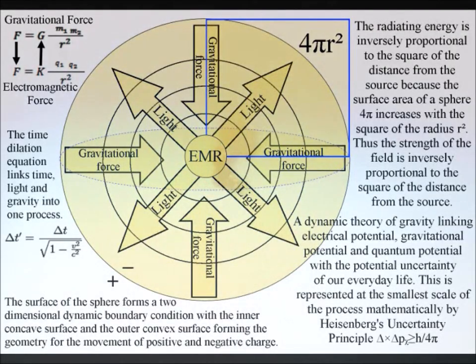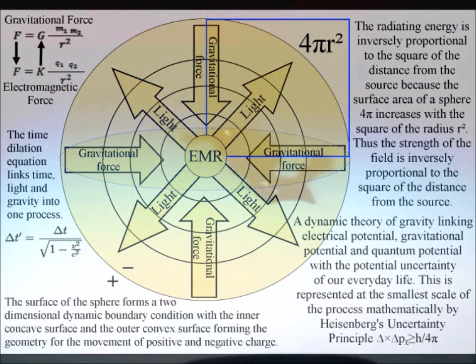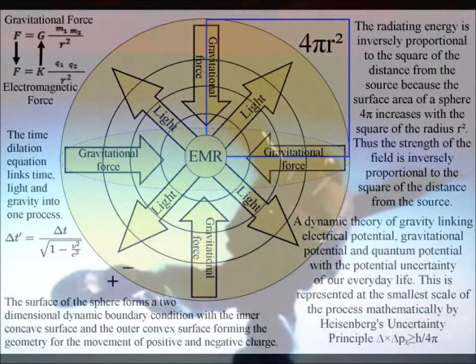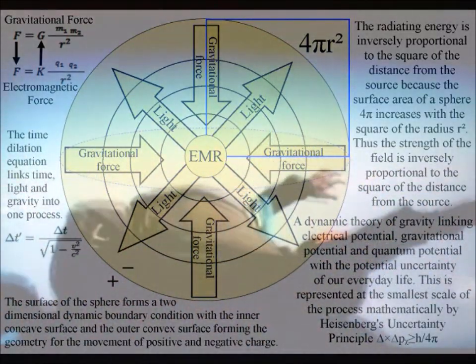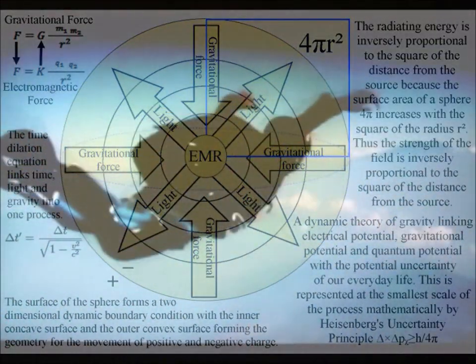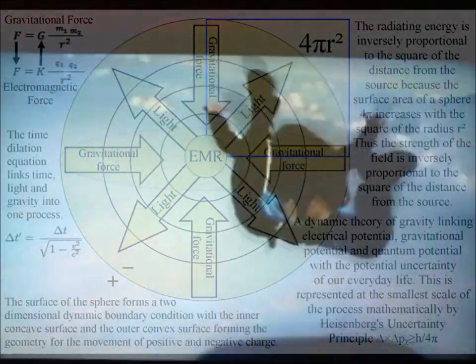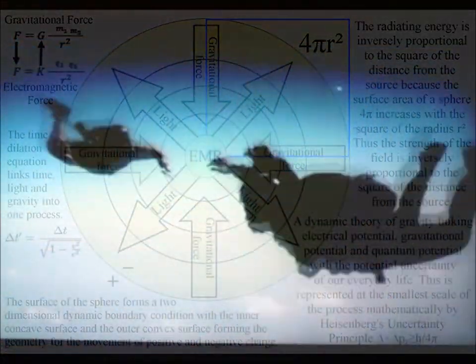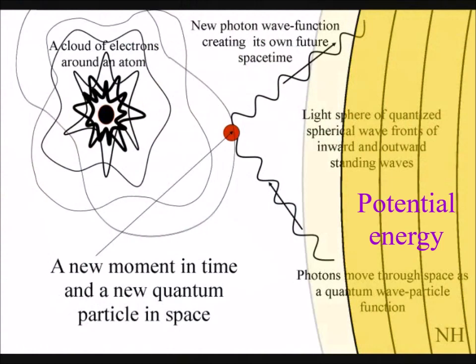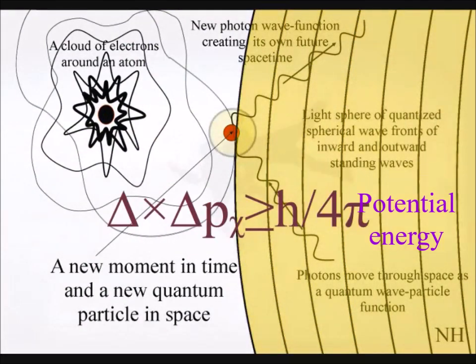In this theory, gravity is quantized because everything is based on a universal geometrical process of energy exchange, formed by light photon energy continuously transforming potential energy into the kinetic energy of matter in the form of electrons.